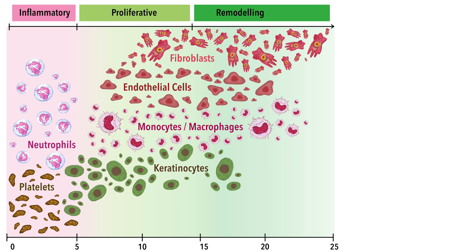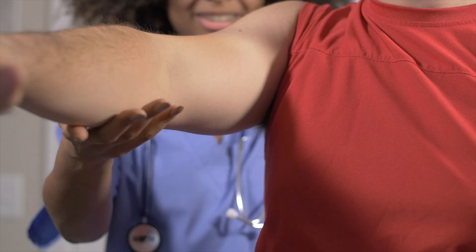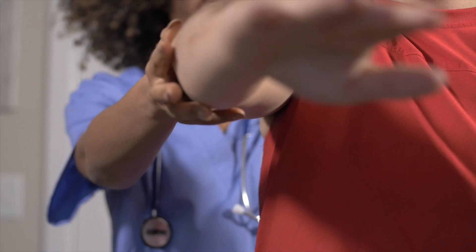Finally, the remodeling phase lasts the longest — it can last from several months to years. During this phase, the initially disorganized collagen fibers in the scar tissue are gradually rearranged and cross-linked to improve the ligament's strength and function. Essentially, the scar tissue is reshaped to more closely resemble the original ligament tissue, and this is where rehabilitation exercises have an important role.